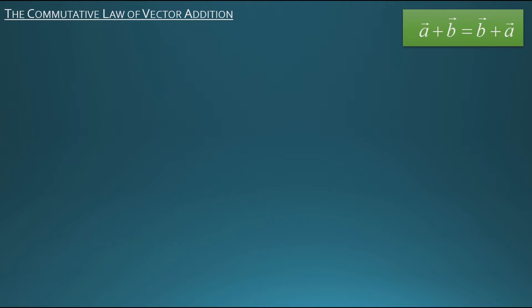So let's start by drawing some vectors. I'll draw vector a like this and vector b like this. They're currently in a tail-to-tail configuration. And to make things easier to see in this demonstration, I'm going to construct a parallelogram based on those two vectors, and that'll look like this. This probably reminds you of the parallelogram law of vector addition.